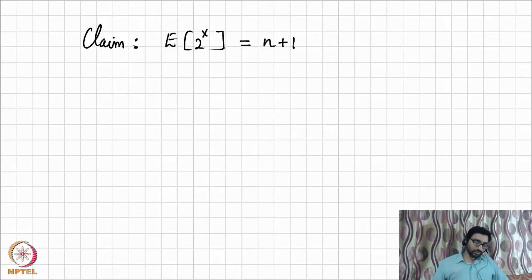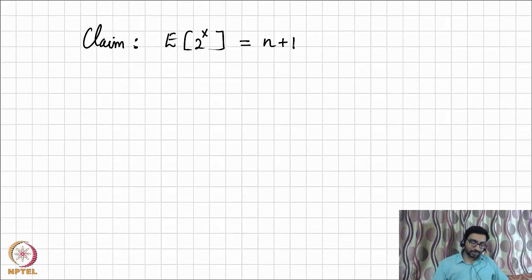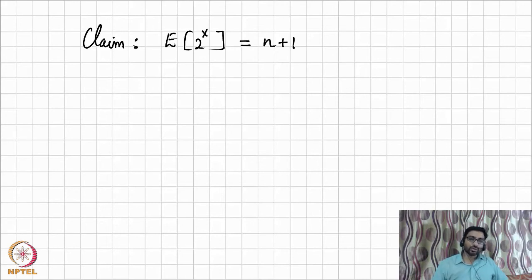The claim we want to prove is that the expectation of the random variable 2^X equals n + 1. This is why we output not 2^X but 2^X − 1, giving us an unbiased estimate of n.